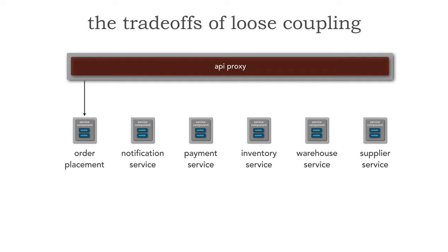When we place an order — essentially a catalog checkout — all six of these microservices are involved. Once order placement validates and accepts that order and generates an order ID, it needs to invoke the notification service via a RESTful call. The order placement service's responsibility is not to notify the customer itself — it sends a RESTful request to the notification service to notify that customer, whether through email, text, or some other means.